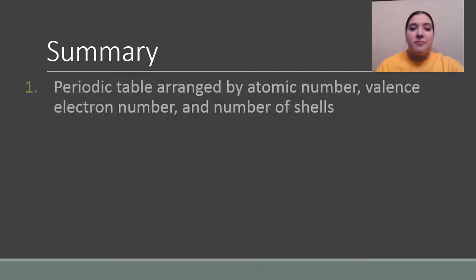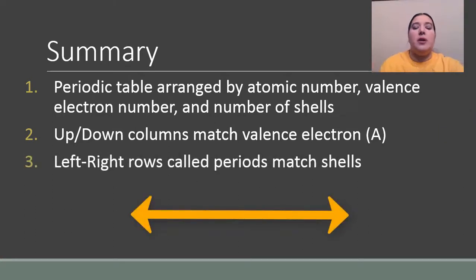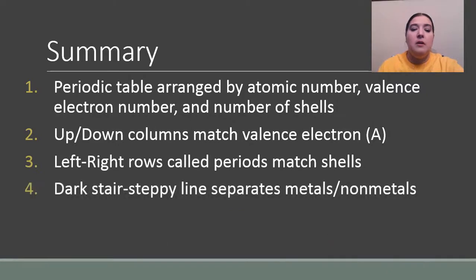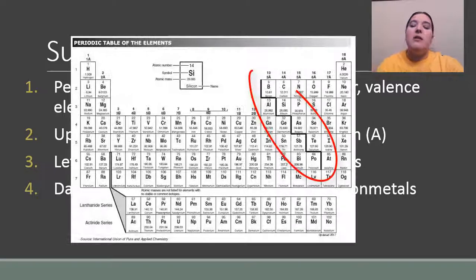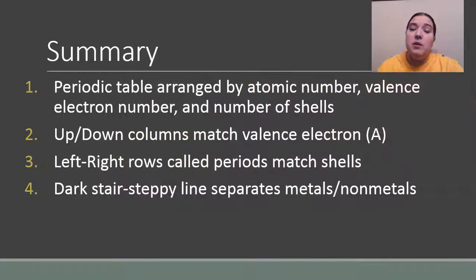In summary, the periodic table is arranged by atomic number, valence electron number, and the number of shells. And I can find any element on the periodic table and automatically tell you how many protons, electrons, valence electrons, and energy levels are in the electron cloud. The up and down columns are called groups, and they match the valence electron number. I can find that on the periodic table by looking at the A number on the official periodic table we use for the star test. The left-right rows on the periodic table are called periods, and that tells me how many shells are in the energy level. And then don't forget there's that dark stair-steppy line that separates the metals from the non-metals on the periodic table. And remember your sixth grade stuff about what makes a metal and what makes a non-metal.